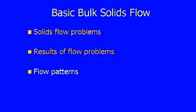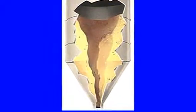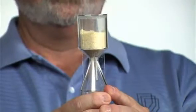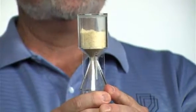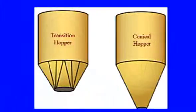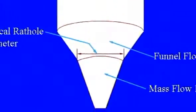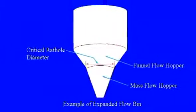Solutions to these problems are dependent on flow patterns that develop in your silo or storage vessel. Poor flow situations like funnel flow, where significant product can remain stagnant. Reliable flow situations such as mass flow, where all the product moves upon discharge. And a combination flow pattern called expanded flow.